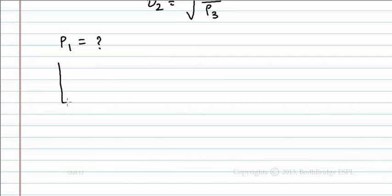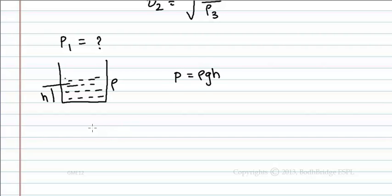Now we know a tank containing a liquid of density rho, then the pressure at a point at h distance from the reference is equal to rho gh. So now let us apply this formula in the above case.